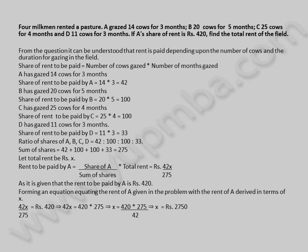This implies 42X = 420 × 275, which implies X = 420 × 275 / 42, giving X = 2,750 rupees. Therefore, the total rent of the field is 2,750 rupees.